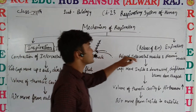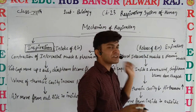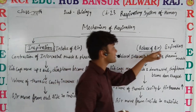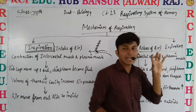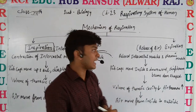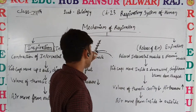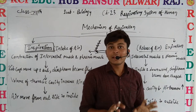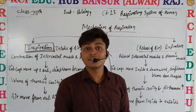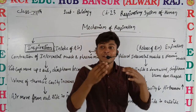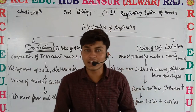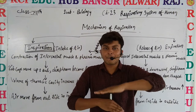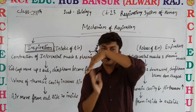In expiration, the opposite happens. The external intercostal muscles and phrenic muscles relax. Due to relaxation, the rib cage moves inward and downward, and the diaphragm, which was flat, returns to its dome shape.